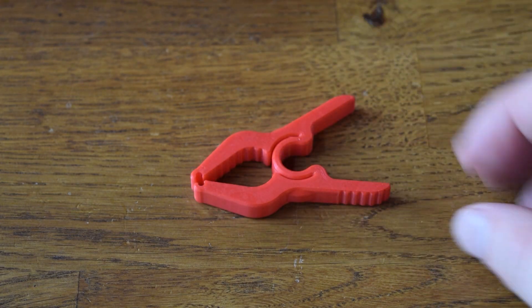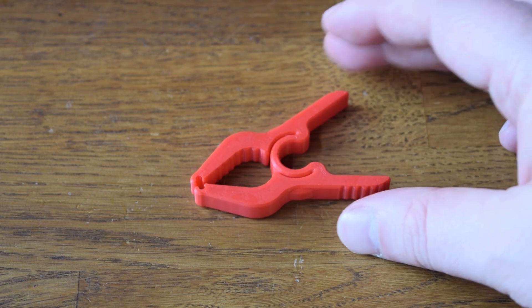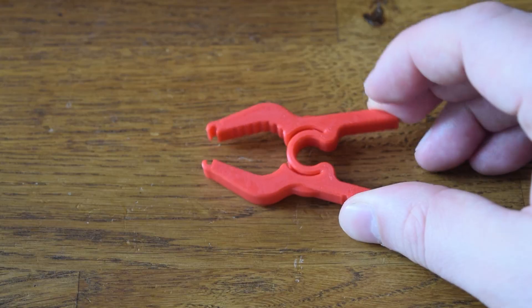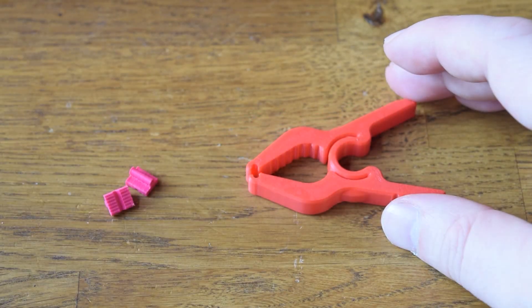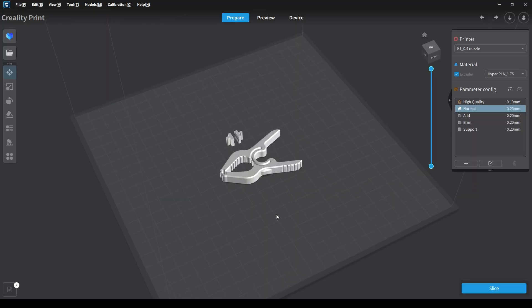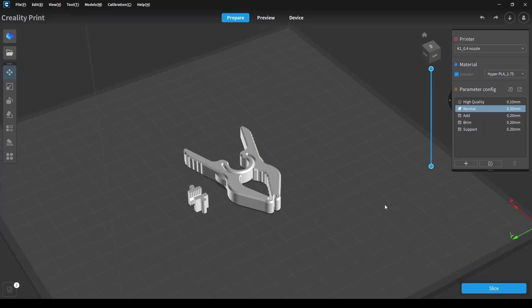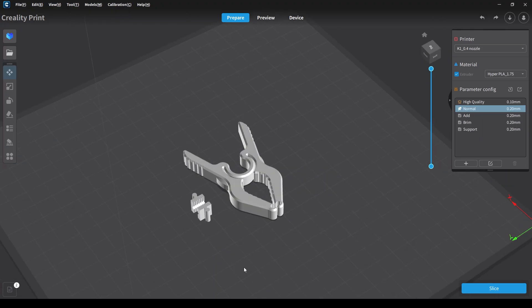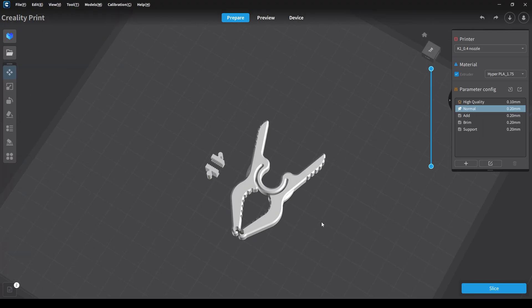Today we're 3D printing a print-in-place clamp. I've been needing something like this to hold together pieces I'm gluing, especially smaller stuff, because I have some big clamps but don't really have anything to hold together something smaller. So this is going to end up being very useful to me.